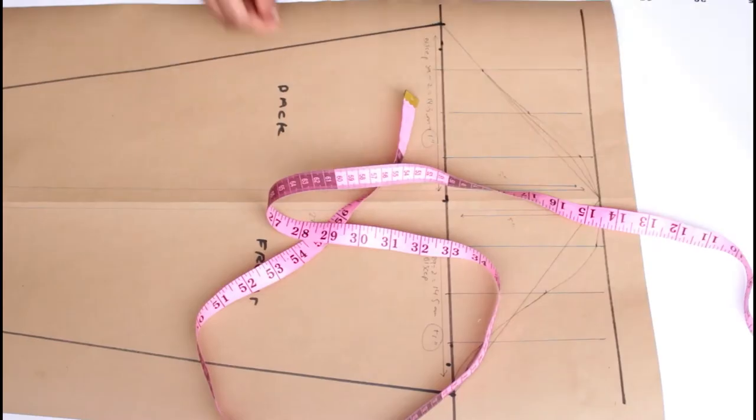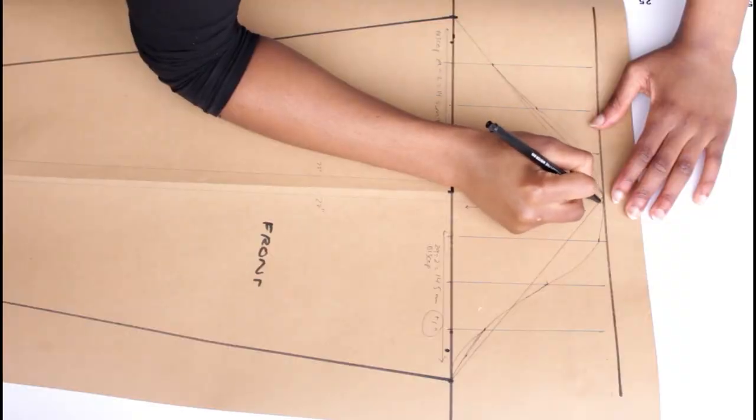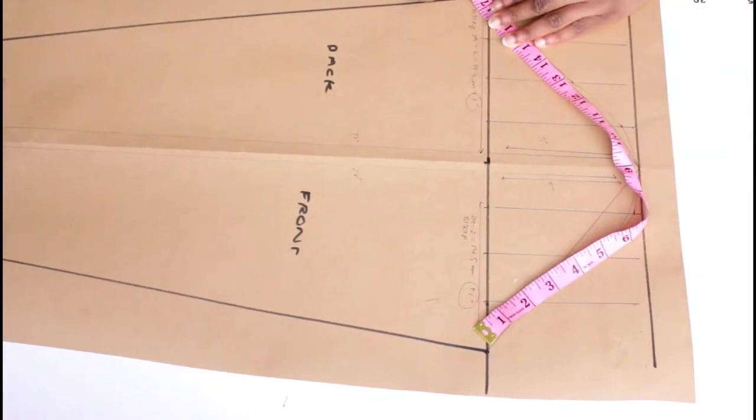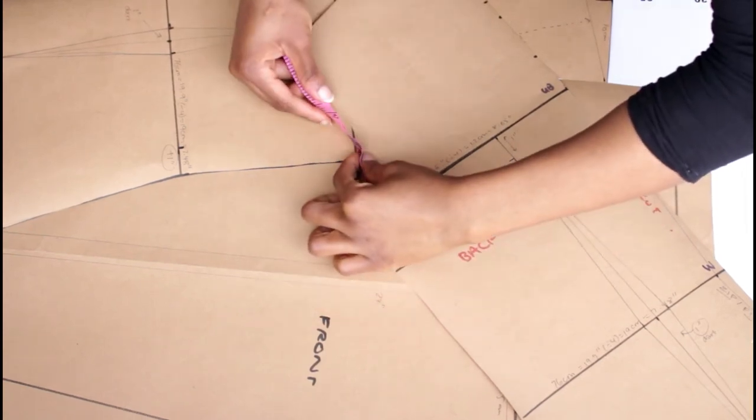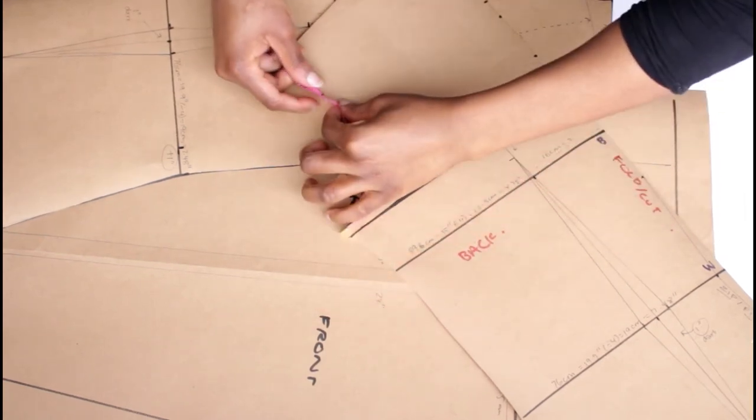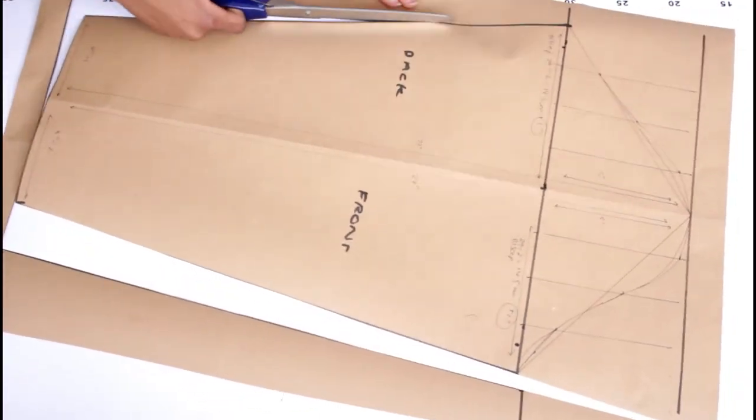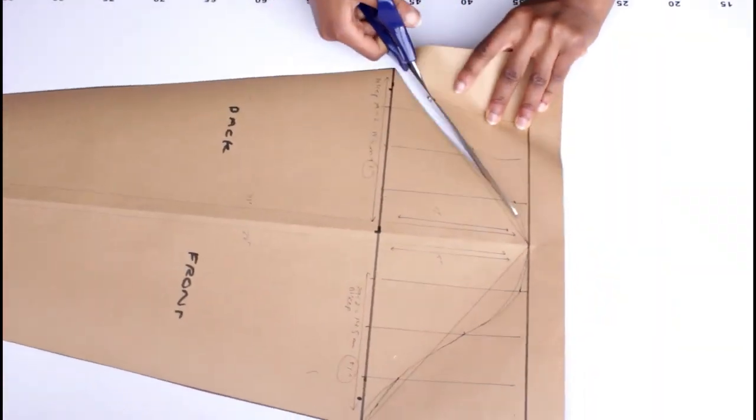Once you make an adjustment make sure to check it that it's okay and also double check with your bodice arm. Measure your front bodice and your back bodice armhole and make sure it matches your pattern for the arm. Then you can cut out your piece making sure to follow the final curves that you've decided.